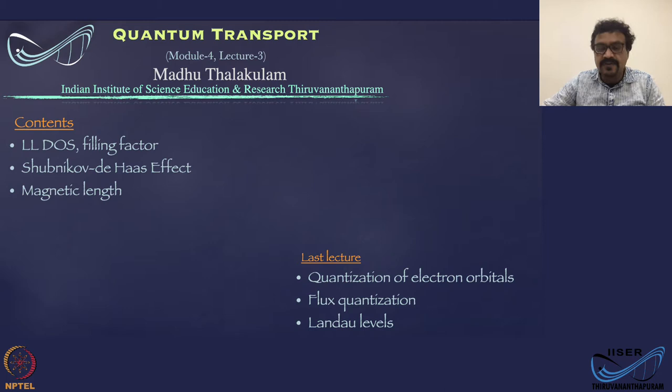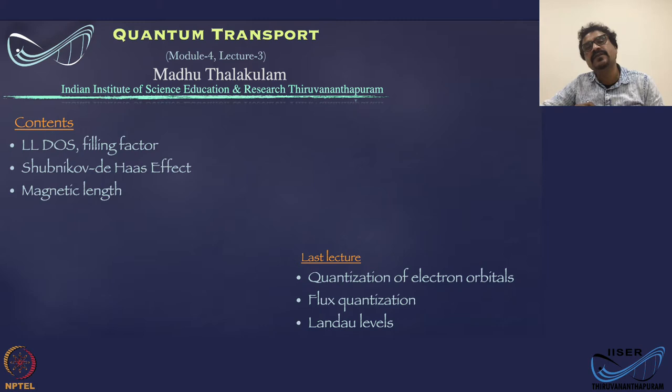In the previous lecture, we discussed the quantization of electron orbitals — how the orbitals are quantized in k-space and in real space, how these orbitals are related to the magnetic field, the carrier concentration, and flux quantization.